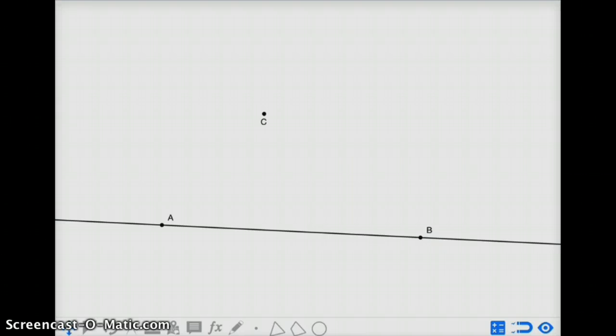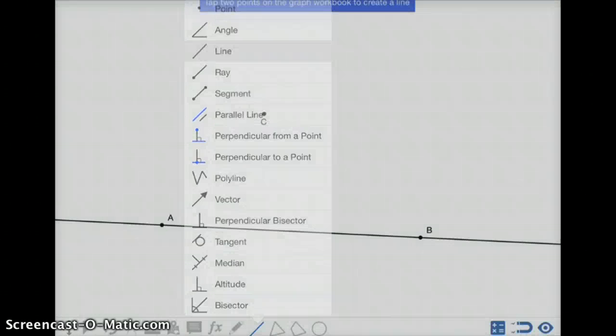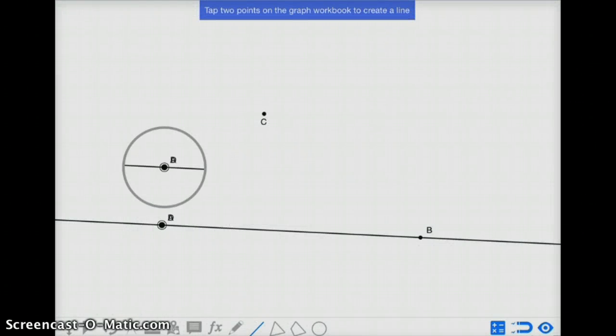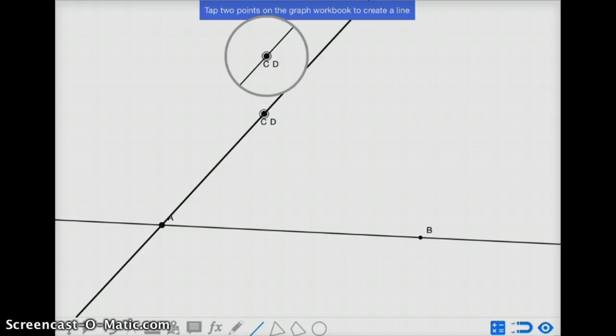To do this, we're going to start by creating a transversal across the future parallel lines that passes through A and C. So first thing I do is I create a line, or can create a ray, that passes through AC.